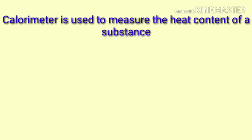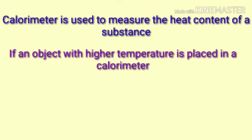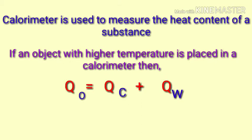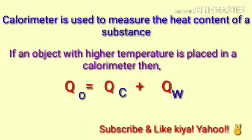Now, if an object with higher temperature is placed in a calorimeter, then we have QO is equal to QC plus QW. What does this equation say? The heat lost by the object O is equal to the heat gained by both the calorimeter plus the heat gained by the water in the calorimeter.